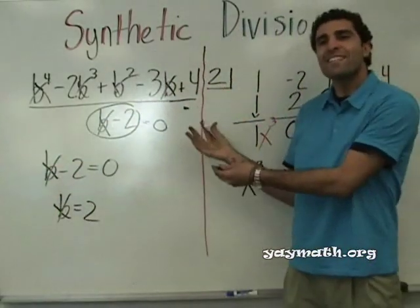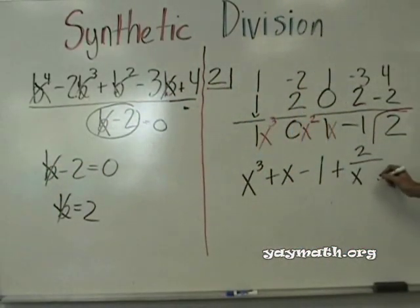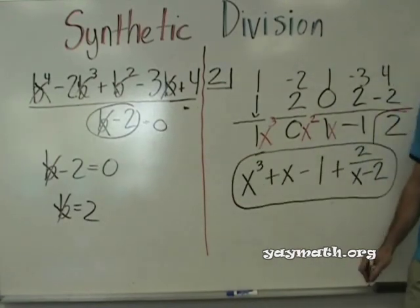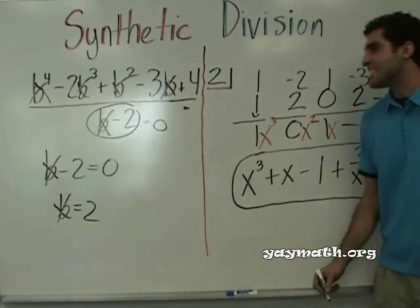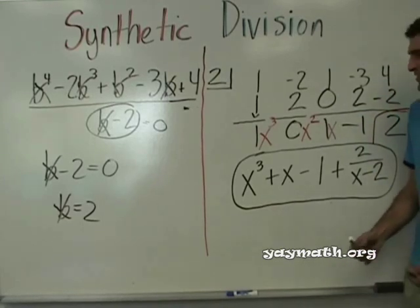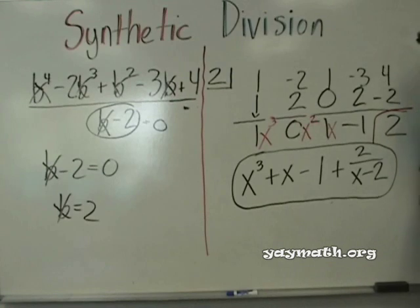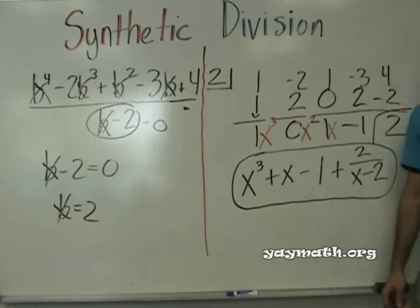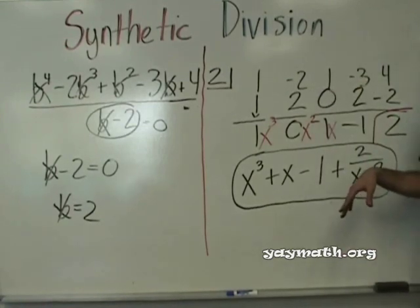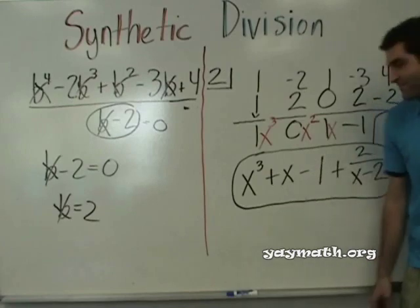So the full answer is x cubed plus x minus 1 plus 2 over b minus 2. That's it — that's synthetic division. Congratulations. Look how much easier it is. It's so fun.